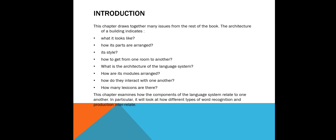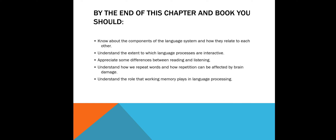Let's go on. This is the introduction. I will not be dwelling a lot of time for this, but I just want you guys to know that this chapter examines how the components of the language system relate to one another. In particular, it will look at how different types of word recognition and production interrelate. By the end of this chapter, these are the things that we hope you could understand, know, and appreciate.